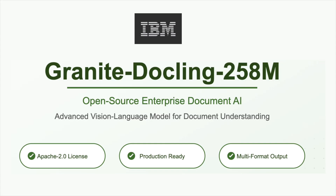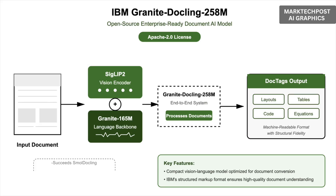IBM team releases Granite DocLing 258 million, an open-source, enterprise-ready document AI model. Granite DocLing 258M is IBM's new compact vision language model for document conversion, released under the Apache 2.0 license. It succeeds Small DocLing by integrating a Granite 165 million backbone with a SigLIP 2 vision encoder, producing an end-to-end system that outputs DocTags — IBM's structured markup format for layouts, tables, code, and equations. This ensures documents are converted into machine-readable representations while retaining structural fidelity.